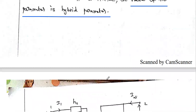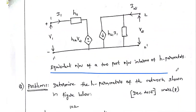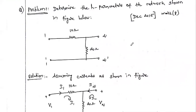Since one parameter is impedance, one is current gain, one is voltage gain, and one is admittance, they are all different — that is why the name is hybrid parameter. The equivalent circuit of the two-port network in terms of H-parameters has, on the input side, impedance h11 in series with a dependent voltage source h12·v2, and on the output side, admittance h22 in parallel with a dependent current source h21·i1.